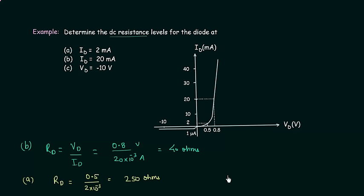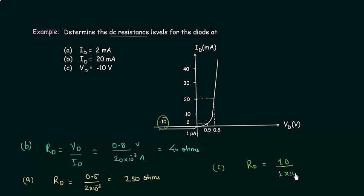Now we will solve case C. In this case we have to find the diode resistance when Vd is equal to minus 10V, which implies we have to find DC resistance in reverse bias condition. The diode voltage is minus 10V and the current through the diode is 1 microamp. So Rd equals 10V divided by 1 times 10 to the power minus 6 amps, and when you solve this the resistance is 10 megaohms.